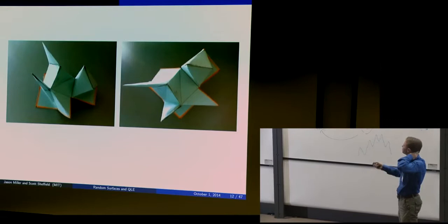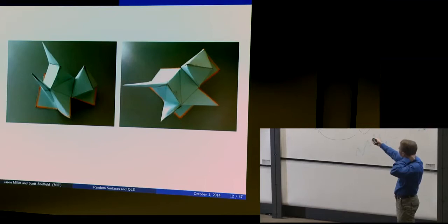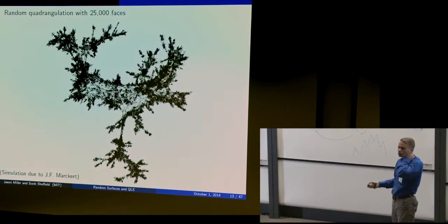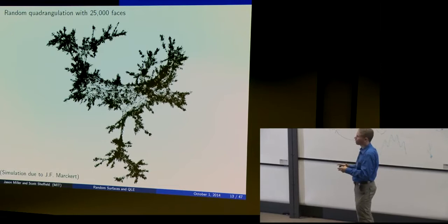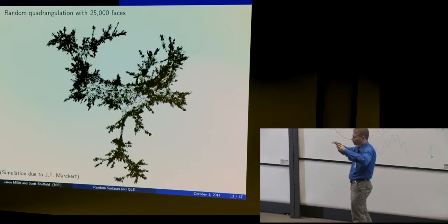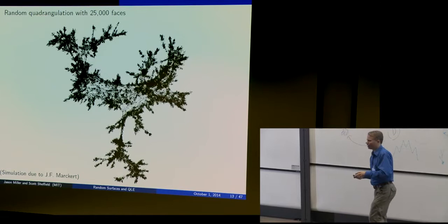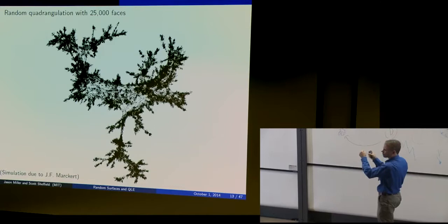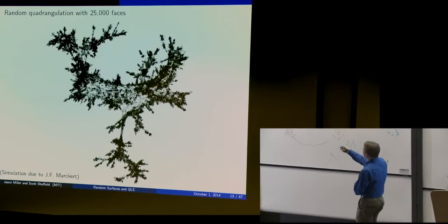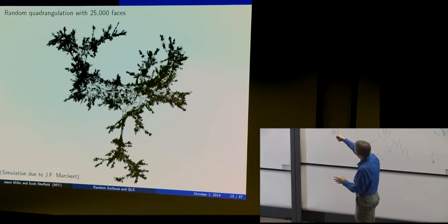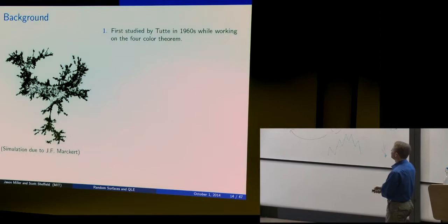Here is a simulation done with paper and glue, and here is a computer simulation with a large number of squares by Suduta Markert. You take a very large number of squares, glue them together, and tell your computer to embed the surface as isometrically as possible in three dimensions, then show you the projection. You get something like this — it has a lot of wild fractal-ish behavior, arms that go far away. It's very far from being a smooth sphere.